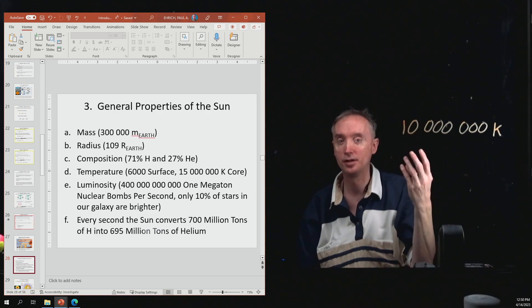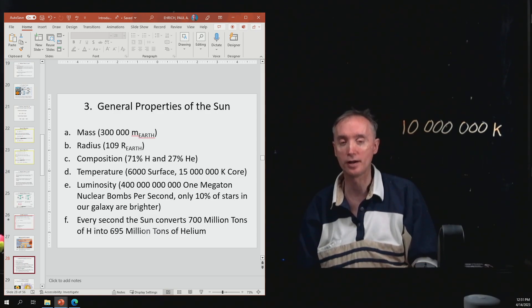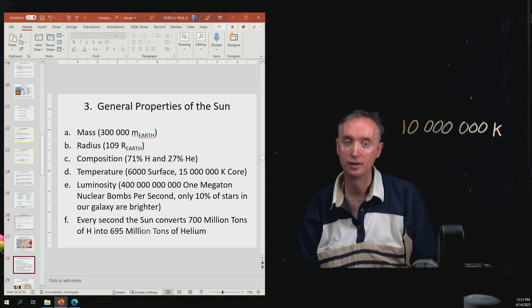Okay, then the luminosity, it's bright. Okay, very, very bright. It gives off a lot of energy per second. And then you can see it's converting a lot of hydrogen into a lot of helium every second.